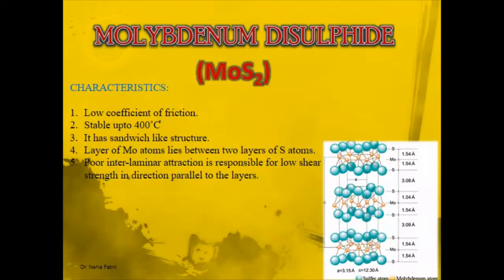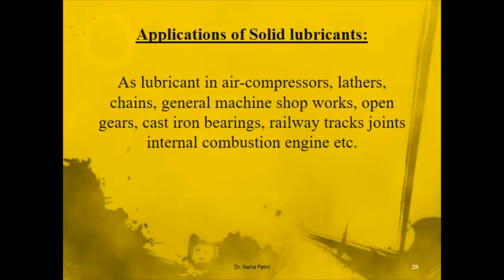The second example of a solid lubricant is molybdenum disulfide (MoS₂). Looking at its structure, molybdenum is sandwiched between two sulfur chains. Since the structure is sandwiched, similar to graphite, there is flexibility in the structure, and that is how it can be used as a solid lubricant. Applications of solid lubricants include railway track joints and internal combustion engines.